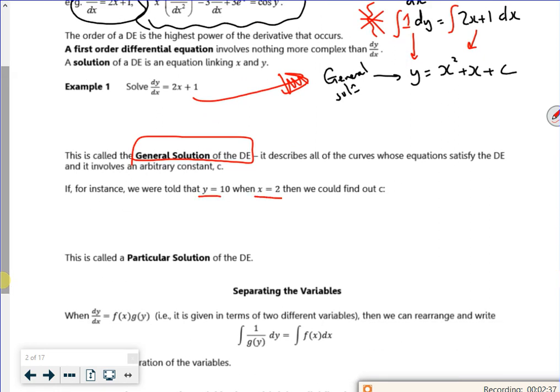So it's saying y is 10 and x is 2. So 10 is 2 squared plus 2 plus c. So that's 6. 4 is c. So y is x squared plus x plus 4. And that becomes a particular solution.